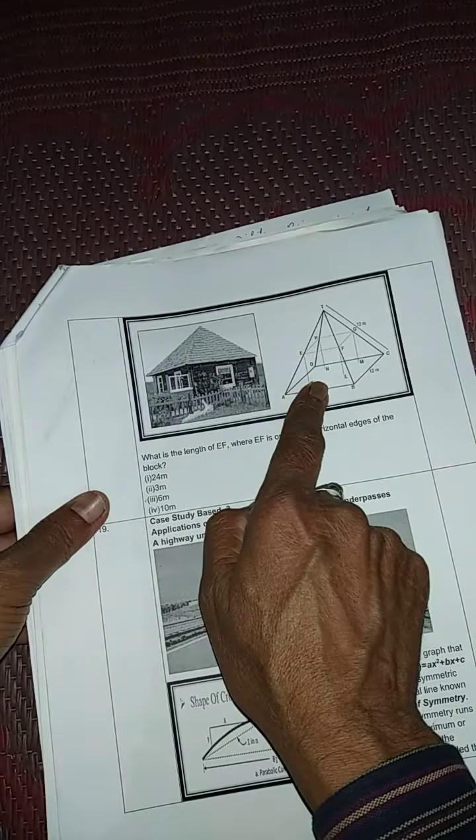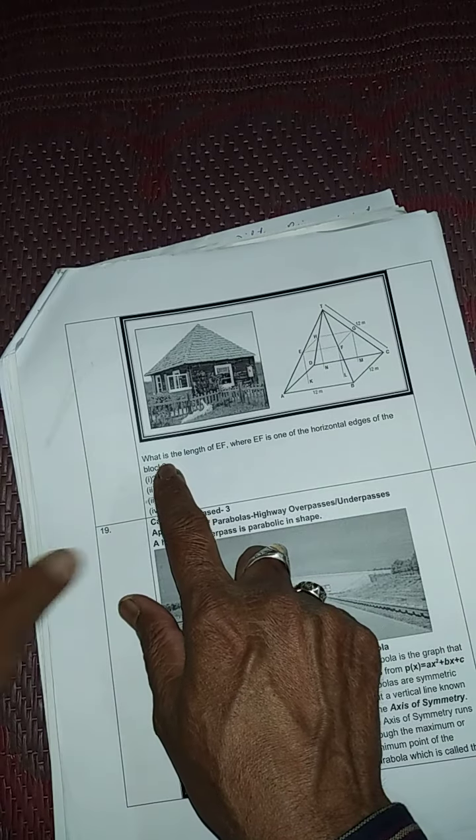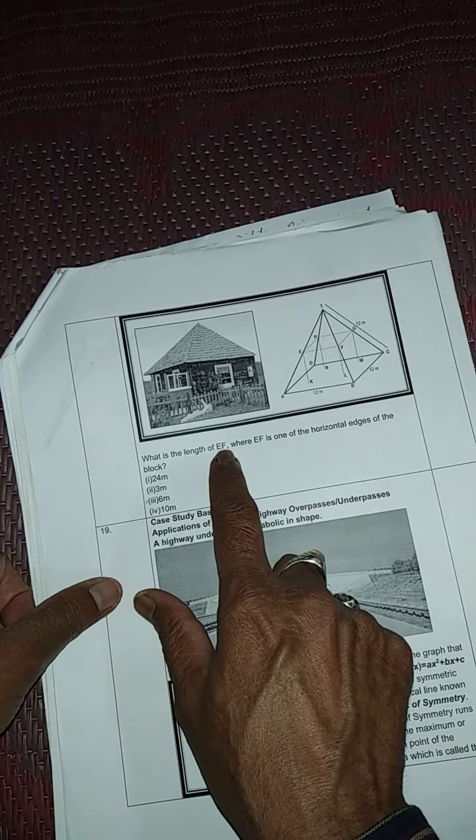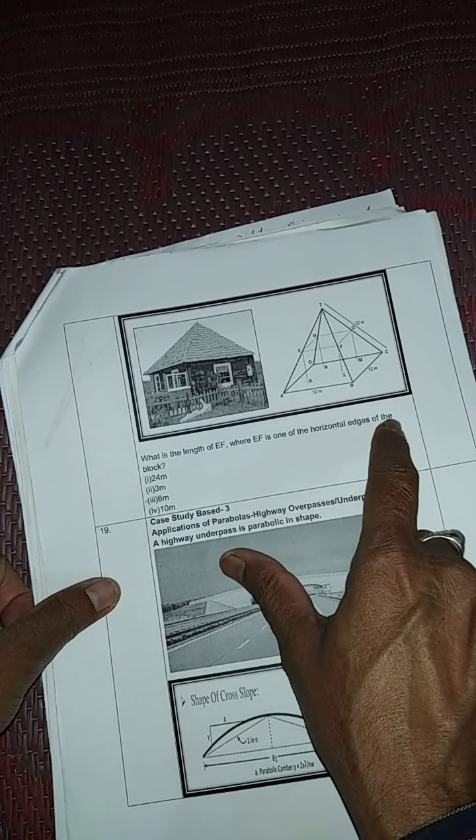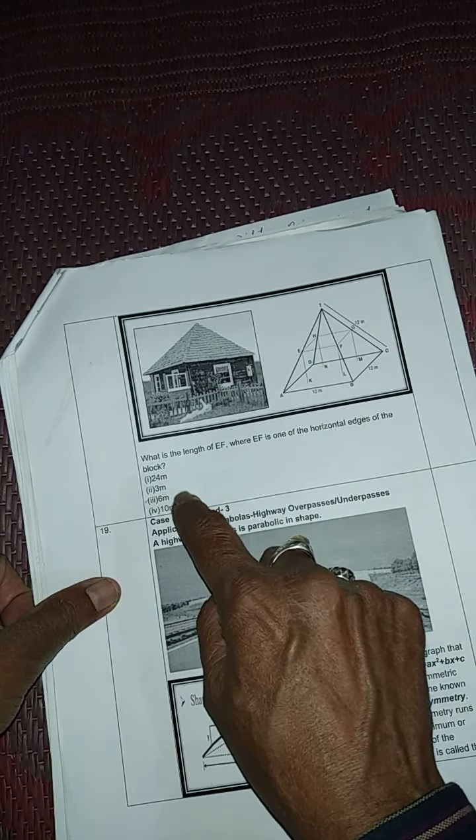Now see its figure they have given here. This is the figure, and in this part they're asking what is the length of EF, where EF is one of the horizontal edges of the block. Four options they have given.